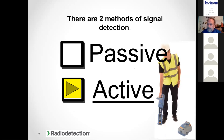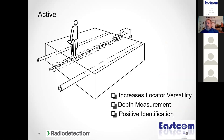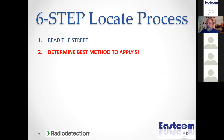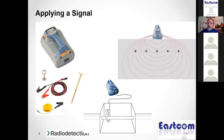Now let's talk about active locating. With active locating we use our transmitter and control that signal. Passive locating leaves us at the mercy of the signal being carried on the utility, and that utility being metallic. With active locating we control the signal, giving us more information to make determinations about what color we're going to paint on the ground. This brings us back to the six-step process — now we determine the best method to apply a signal.